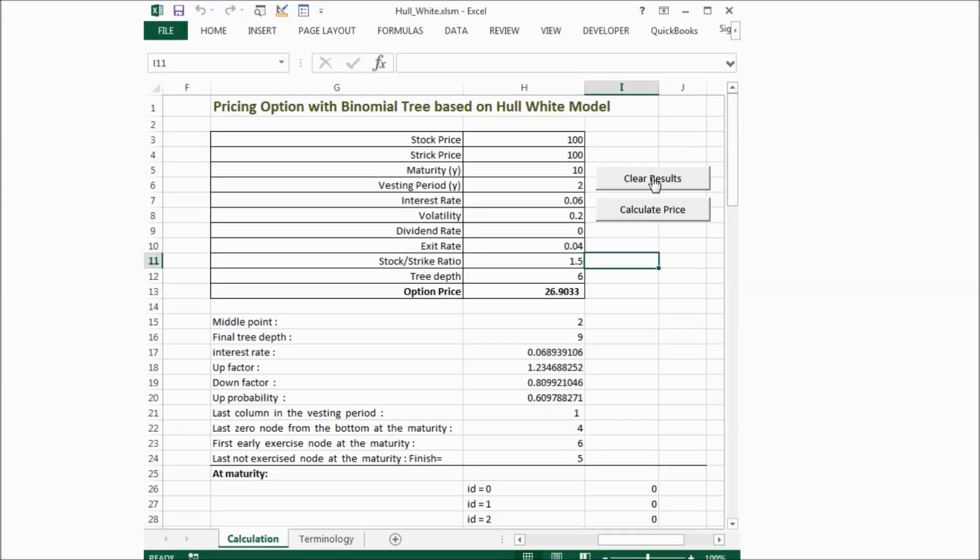Let's clear the results and recalculate. We can see the final tree depth is 9 instead of 6.